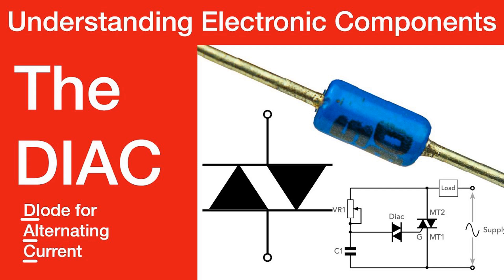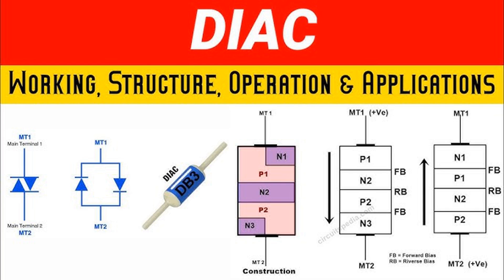Symmetrical characteristics: the symmetry of the DIAC ensures that its breakdown voltage and behavior are the same for both positive and negative half cycles of an AC waveform, which makes it ideal for AC power control.